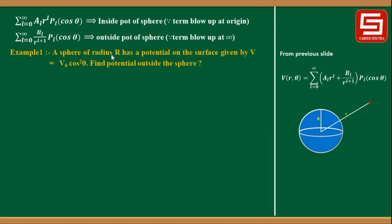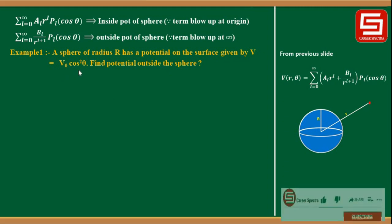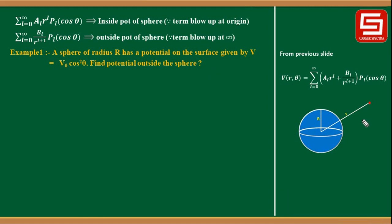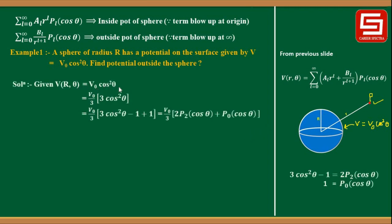Example 1: A sphere of radius R has a potential on the surface given by V = V₀ cos²θ. Find the potential outside the sphere. Given: a sphere whose surface potential is V = V₀ cos²θ, and we need to calculate the potential at a point outside the sphere.